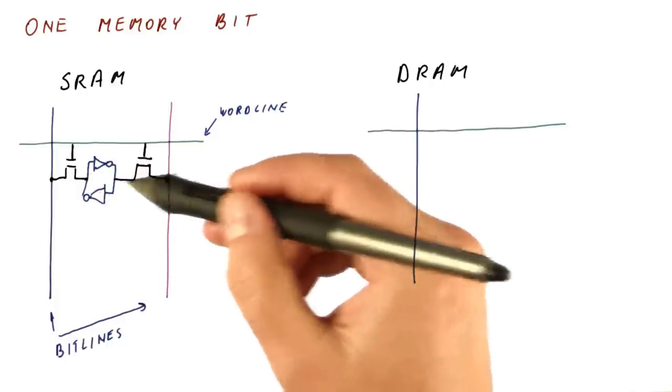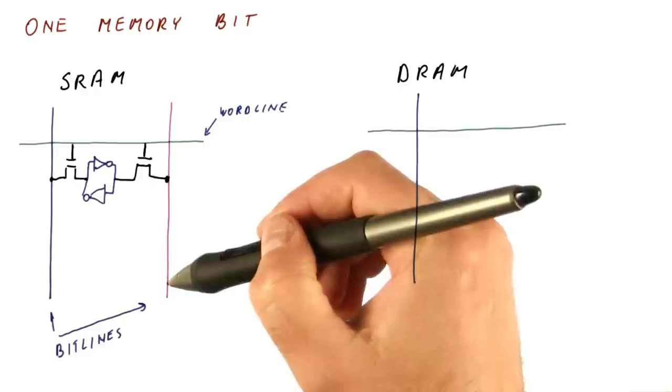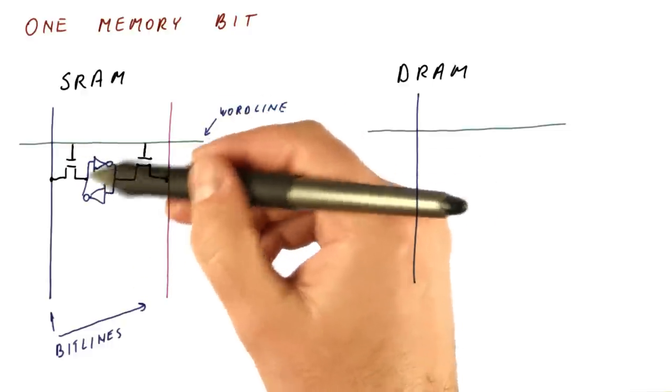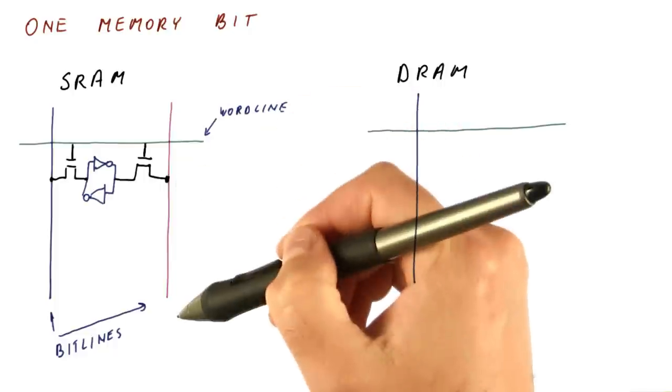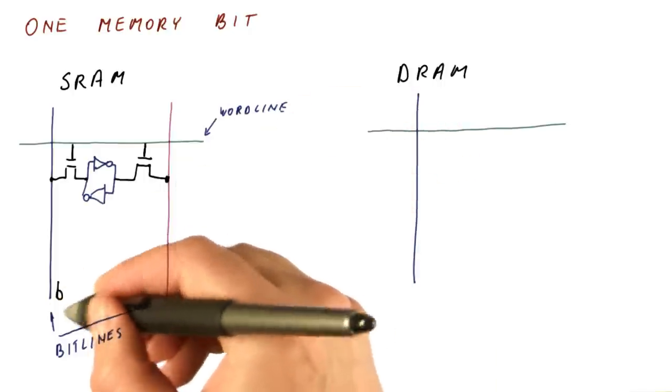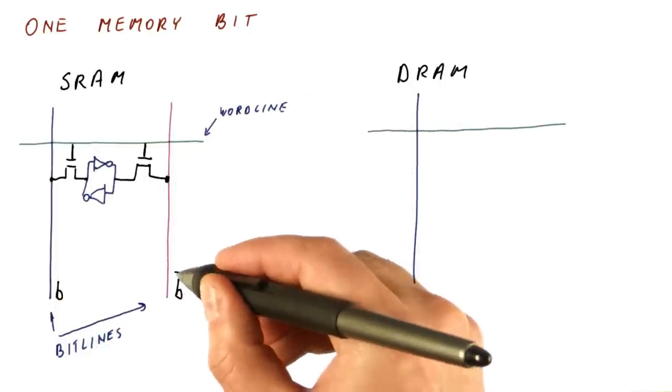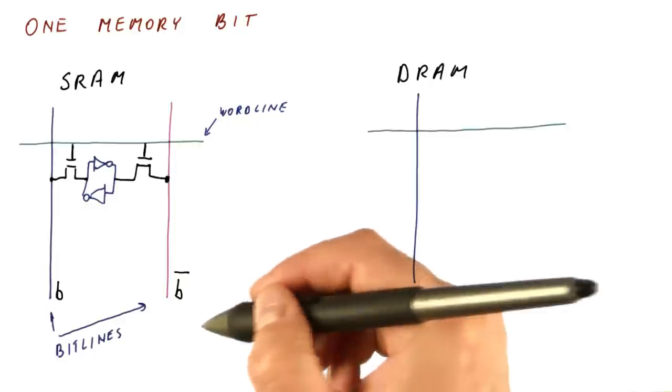When we want to read, we can connect both of them to the bit lines. And if we wrote a one here, we will have this one be one, this one be zero. So this line really outputs the bit we want, and this one just outputs the opposite value of the bit we want.